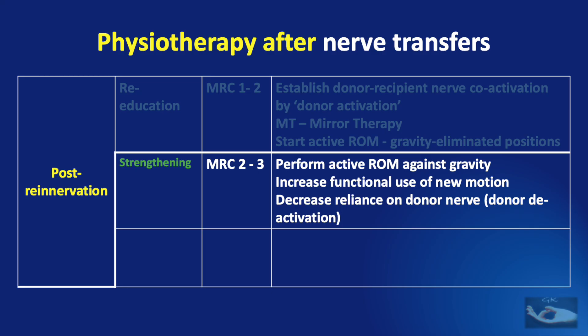Now that the muscle power has reached MRC 2, the strengthening phase begins and is followed up until the MRC grading reaches 3. The patient is asked to perform active range of movement against gravity to increase functional use of the new motion, and it also decreases the reliance on the donor nerve — this is known as donor deactivation. In the example of a double fascicular transfer in which fascicles of the median nerve are transferred to brachialis and ulnar nerve to the biceps to restore elbow flexion, donor deactivation is critical so that patients can flex the elbow while keeping the digits extended.